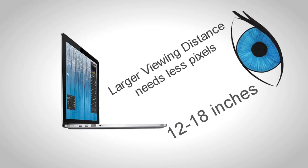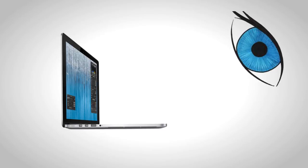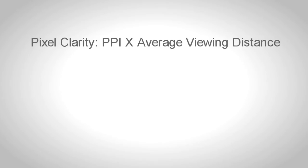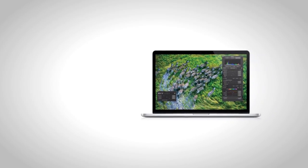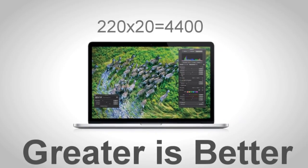That is basically what retina display is. There is actually a pretty nice formula done by Logically Hank, where he multiplied the PPI by the total viewing distance. As you guys can see, using this formula, the pixel clarity is a lot more on the MacBook Pro than on the iPad or on the iPhone 4S. So the MacBook Pro's retina display is actually quite good — it's not just about PPI, it's also the viewing distance.